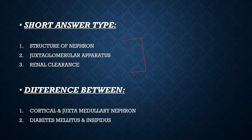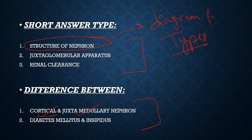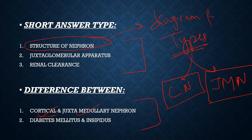Next, we have the short answer questions and the differences. The cortical nephron and juxtaglomerular nephron — you will definitely learn in the nephron chapter. In the structure of the nephron, you will draw the diagram and write about the different types. There are two main types of nephron: cortical nephron and juxtaglomerular nephron. If not covered, it can also come as a difference — difference between cortical nephron and juxtaglomerular nephron.